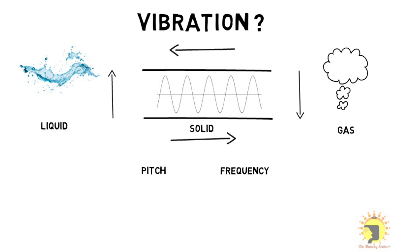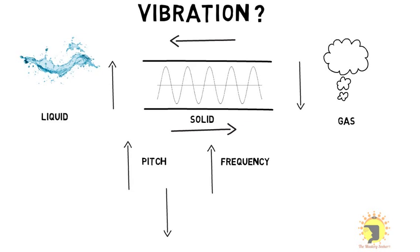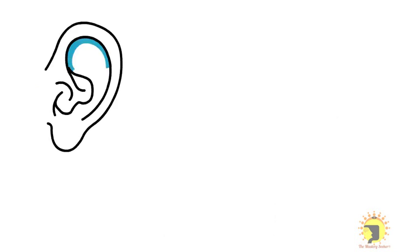The higher the pitch, the higher is its frequency, and lower the pitch, the lower will be its frequency. Human ear can hear sounds of frequencies ranging from 20 Hz to 20,000 Hz.